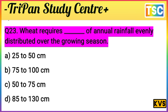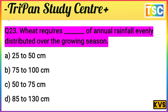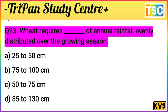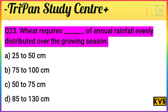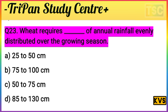Next question: Wheat requires dash of annual rainfall, evenly distributed over the growing season. Option A: 25 to 50 cm. Option B: 75 to 100 cm. Option C: 50 to 75 cm. Option D: 85 to 130 cm. Check your knowledge first — I give you a few seconds.